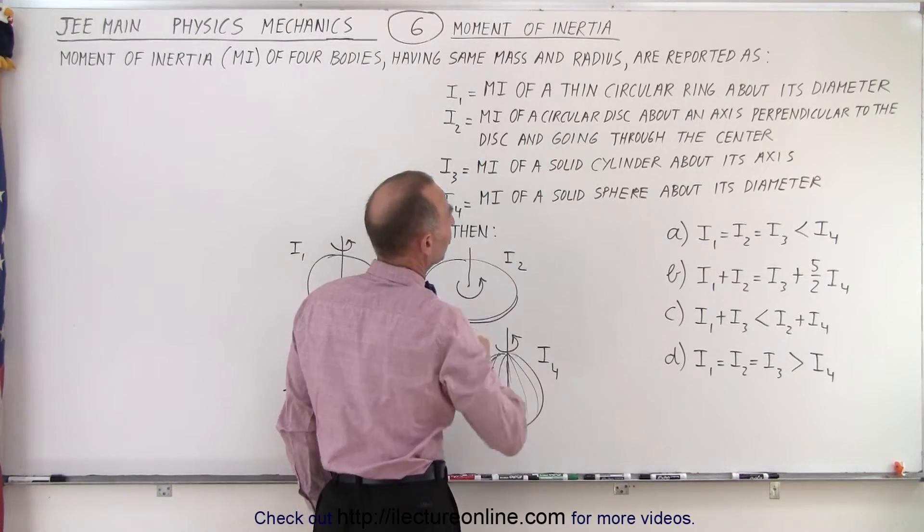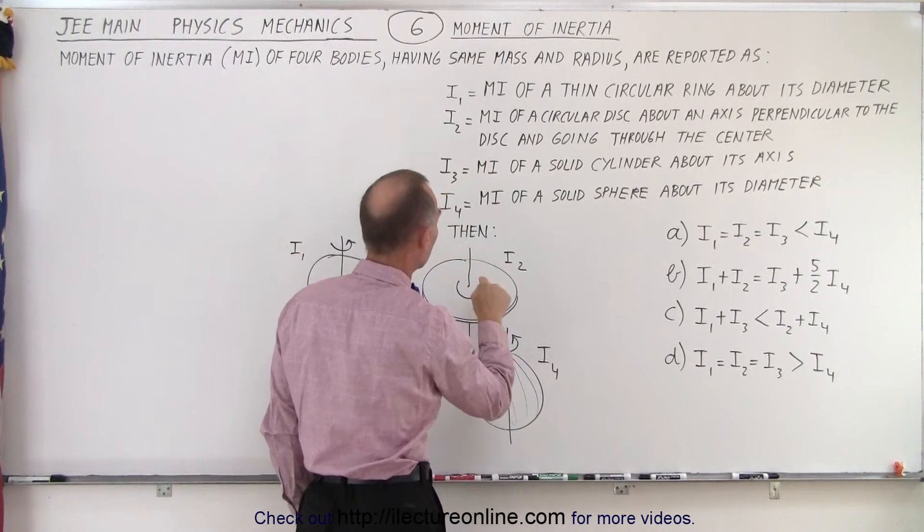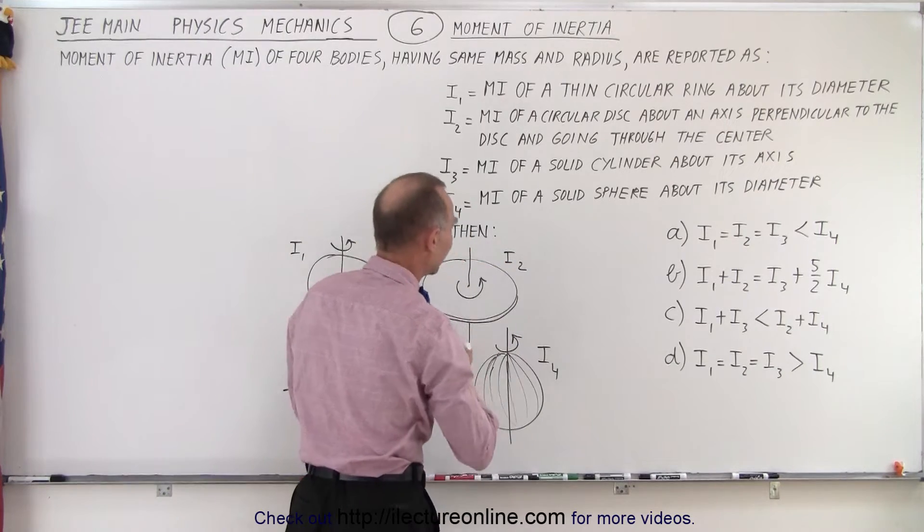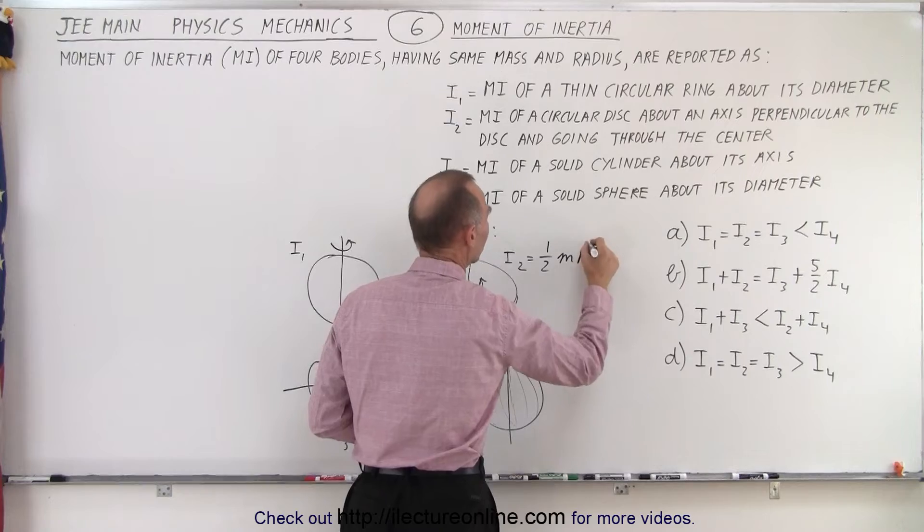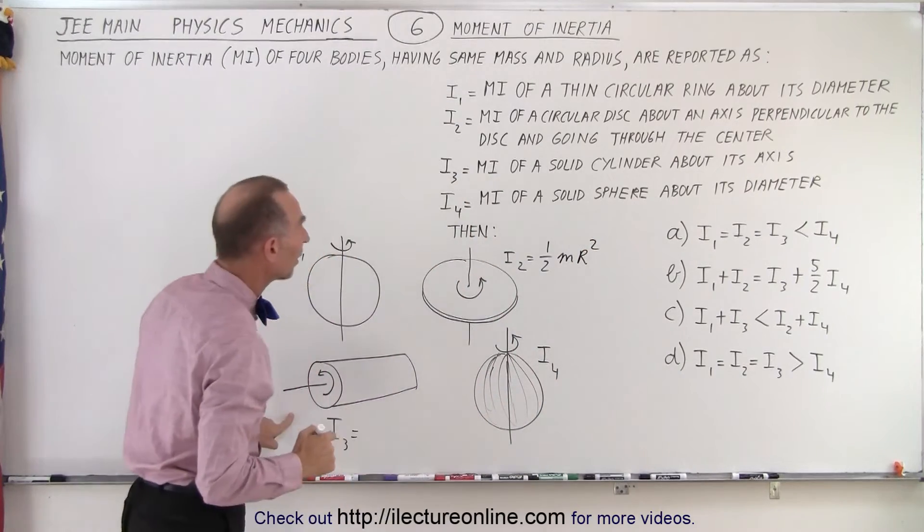So I said okay, let me skip this one, let's go to the other three and see if I know those. The moment of inertia of a circular disc about an axis perpendicular to the disc and going through the center, that's an easy one. This is equal to one-half m r squared.